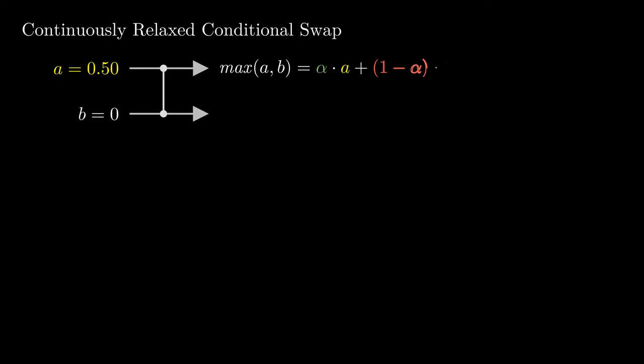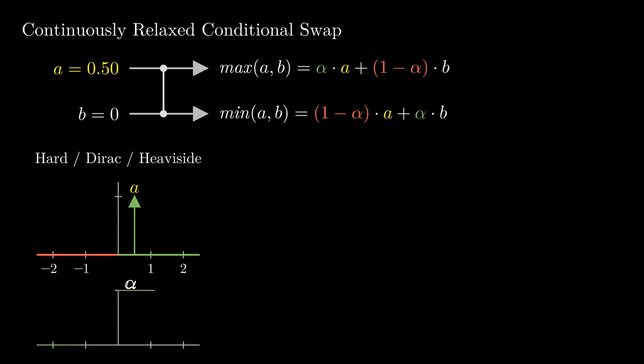We can express min and max as convex combinations of A and B, weighted by alpha, and compute alpha via the Heaviside function of the differences. If A minus B is positive, alpha is 1 and the maximum is A. If A is negative, alpha is 0 and the minimum is A while the maximum is B. This leads to a hard conditional swap that is non-differentiable.